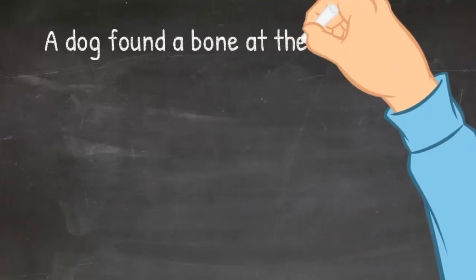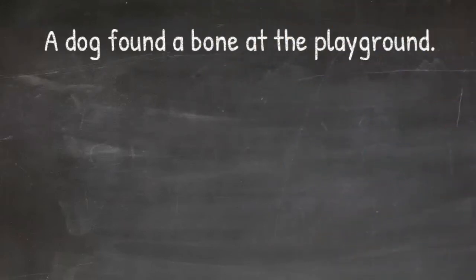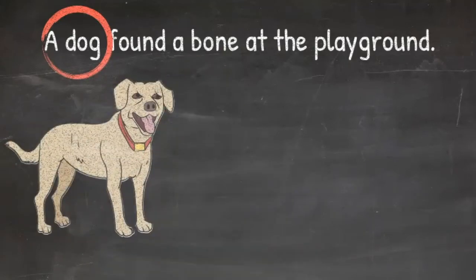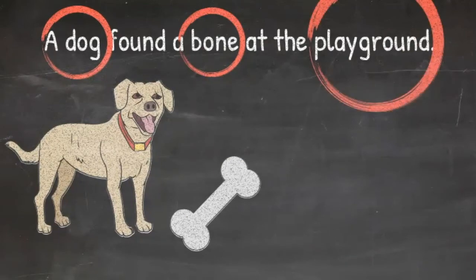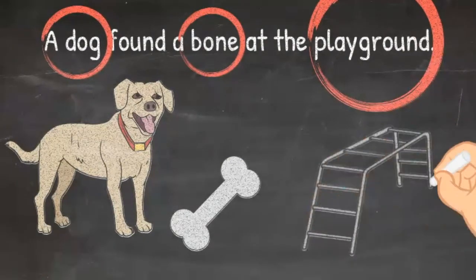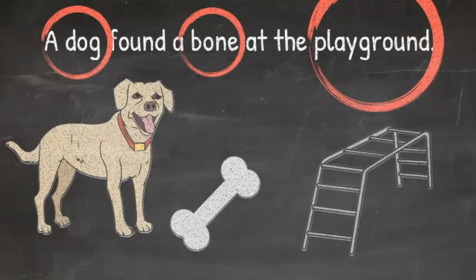Let me do one more sentence. A dog found a bone at the playground. Dog is an animal and it's a noun in this sentence. Bone is a thing, that is also a noun. Playground is a place, and that's also a noun. Okay, that was fun.